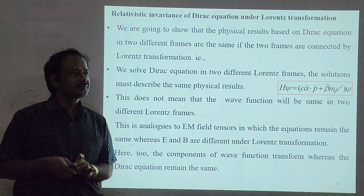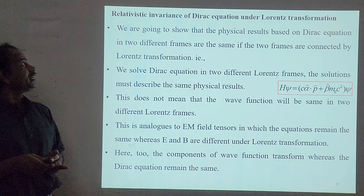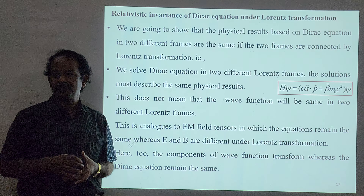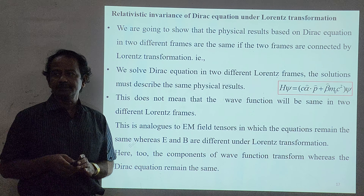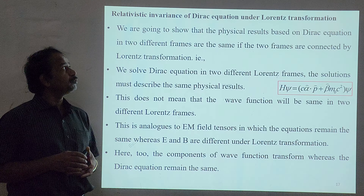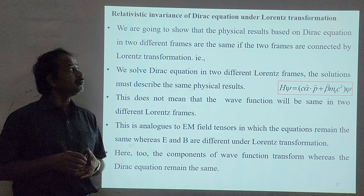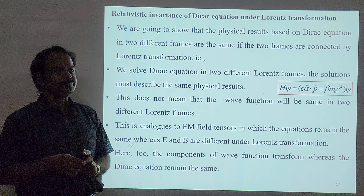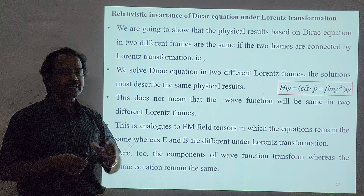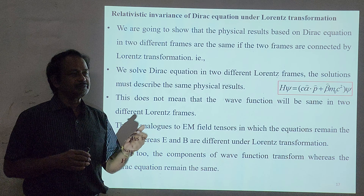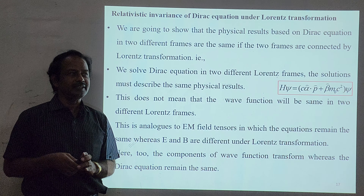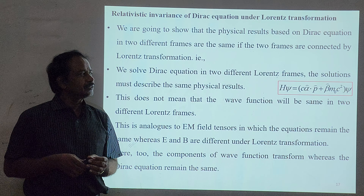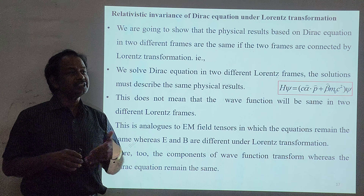Good morning students. Let us discuss today the Relativistic Invariance of Dirac Equation under Lorentz Transformation. This is a continuation of the last video lecture, which was about the covariant form of the Dirac equation. We know that the Dirac Hamiltonian is given in this form — it is a first-order differential equation, symmetric in both space and time, exactly consistent with the special theory of relativity.